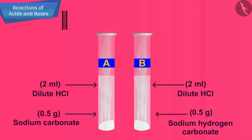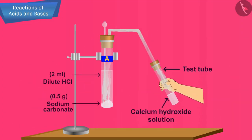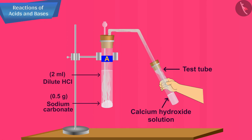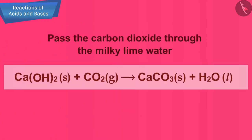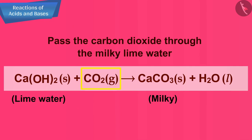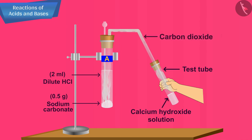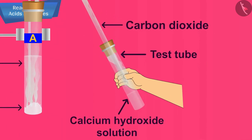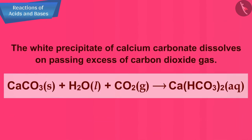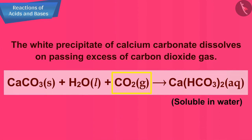You will observe brisk effervescence of a gas being produced. Pass the gas produced in each case through lime water (calcium hydroxide solution). You will observe that the lime water turns milky, which shows that the gas evolved is carbon dioxide. If you keep passing carbon dioxide through the milky lime water, it becomes clear again, showing that the white precipitate of calcium carbonate dissolves on passing excess carbon dioxide gas.